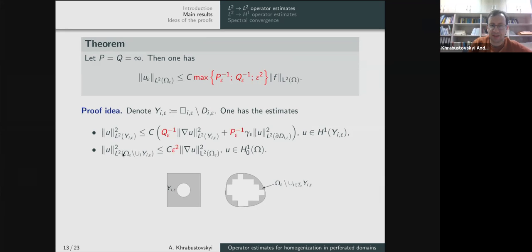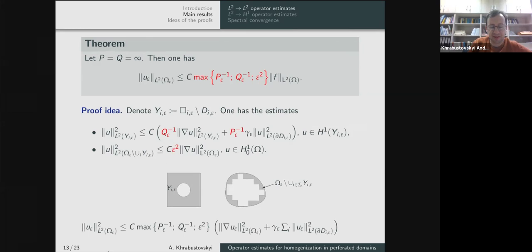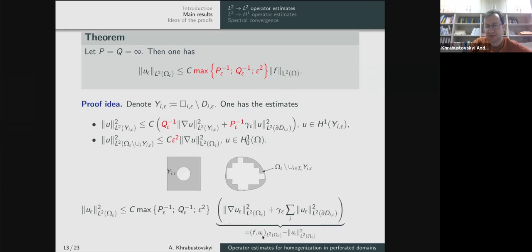The last estimate concerns the boundary layer of thickness epsilon where there are no holes; since we have Dirichlet conditions on the boundary, the estimate gives epsilon squared (with Neumann it would be just epsilon). Summing everything, we get an integral over omega_epsilon, taking the largest of the constants 1/p, 1/q, and gamma. What's written is exactly the form that generates our operator, and since one term is negative we remove it, yielding an inequality. Applying Cauchy-Schwarz and dividing by the norm of u_epsilon gives the result.